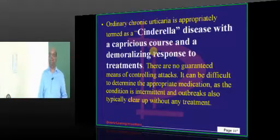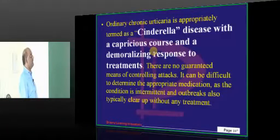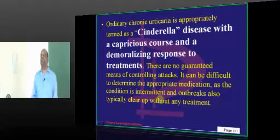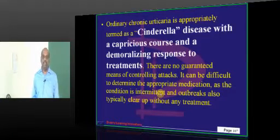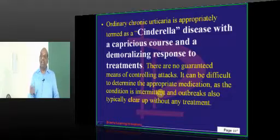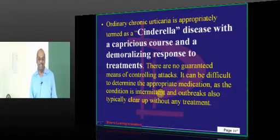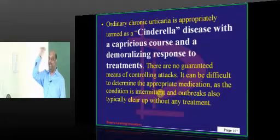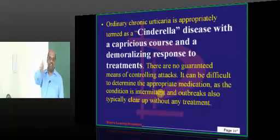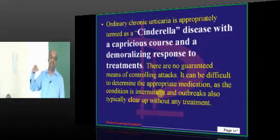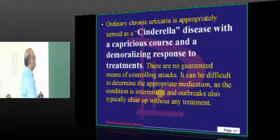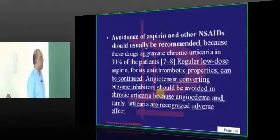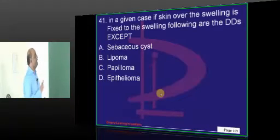The classical description of chronic urticaria is that it is called a 'Cinderella disease' with a capricious course and a demoralizing response to treatment. Your patient will say all the medicines you give are not stopping the itching. You don't know whether the source is flowers, pollens, air, pollution — it's called capricious course with demoralizing response. Avoid NSAIDs, which can be the precipitating factor.